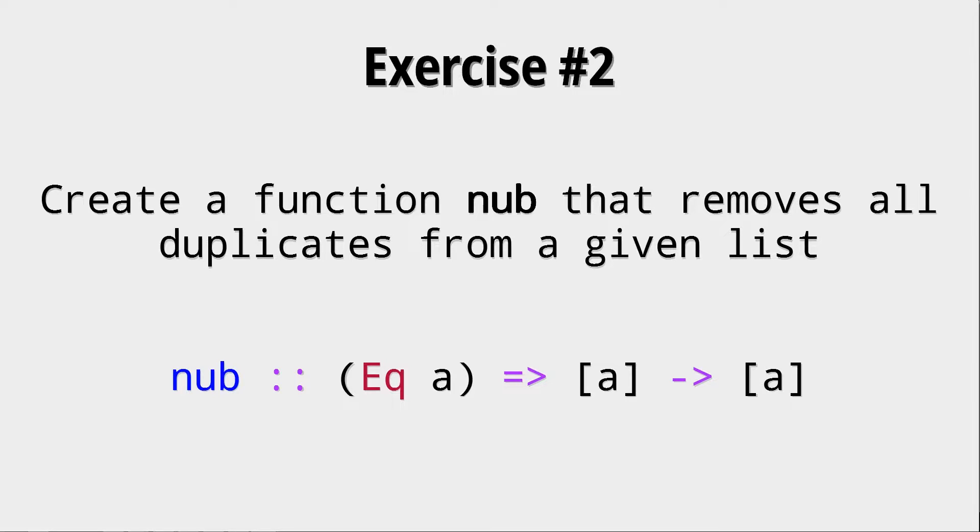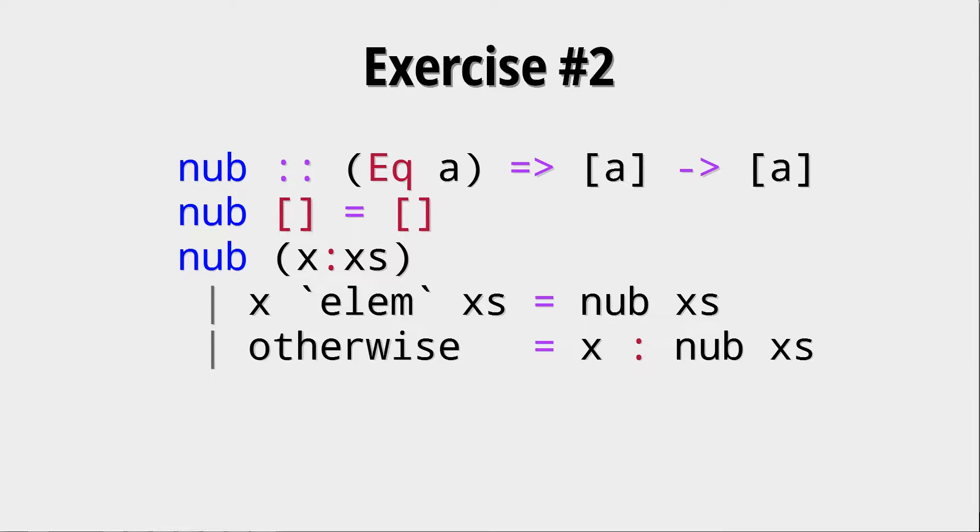Okay, so let's look at the solution. This can be done with two pattern matchings. If we have an empty list then we return an empty list since there are no duplicates in it. If we have some element X in the list we check if it's an element in XS already. Then in this case we would have a duplicate and we simply don't add it to our recursive call. Otherwise we build a new list X prepended to the recursive result. This is the infix syntax for the elem function. You could write it elem X XS and it would be the same.